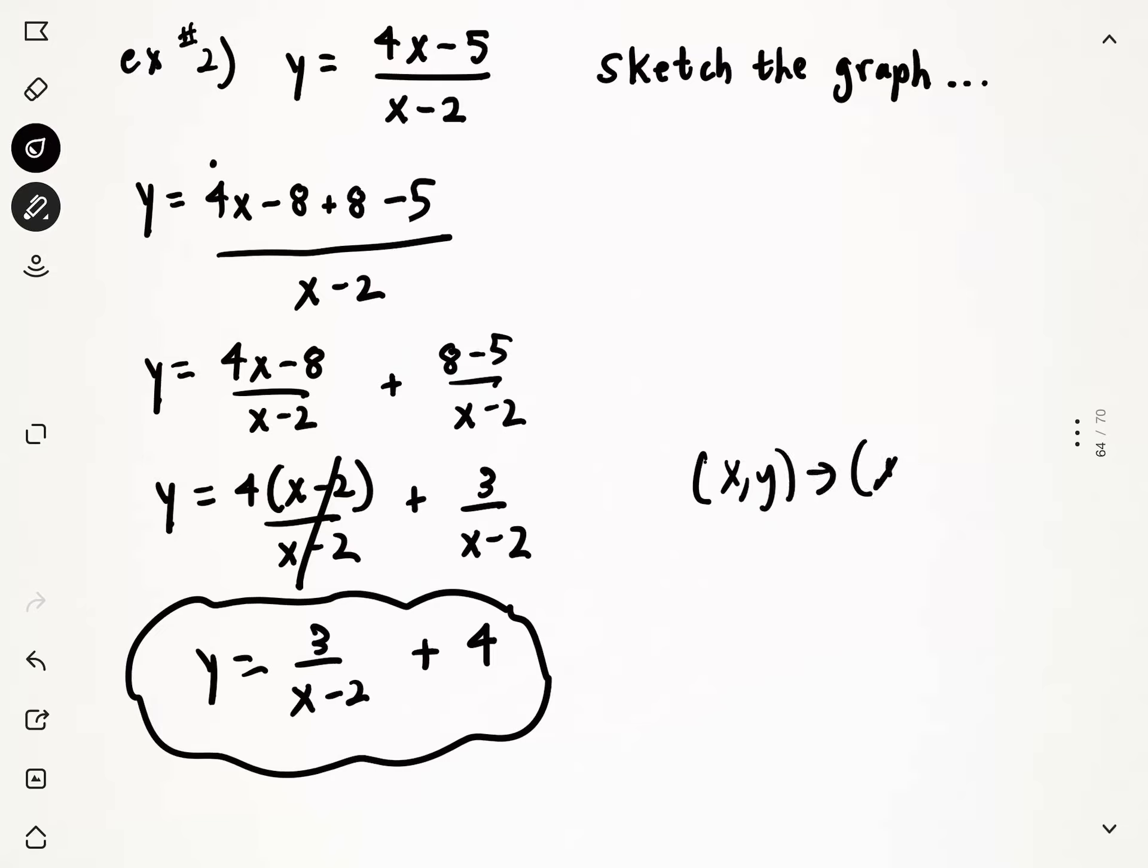And of course that would be x plus 2, 3y plus 4, put in your key points, get your asymptotes, and so on, which you guys can work on on your own.